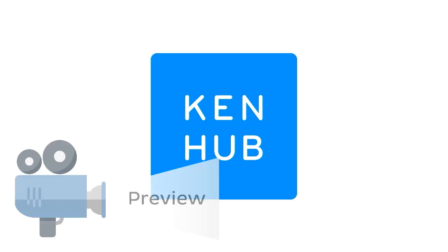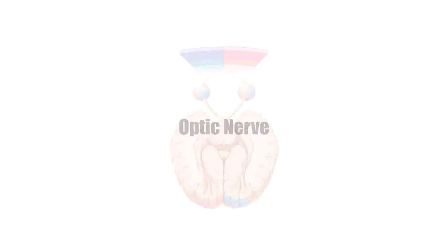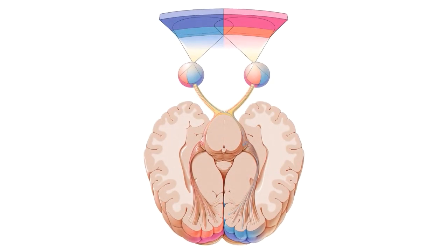Hello everyone, it's Megan from KenHub here and welcome to our tutorial on the optic nerve. During this tutorial we'll go over all of the structures seen in this image which are involved in the visual pathway. This image here is a superior transverse section of the brain and we can see structures such as the globe of the eye, the optic nerve, and the optic chiasm here.